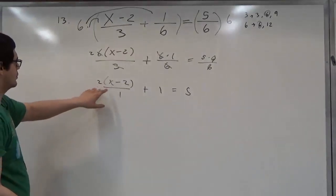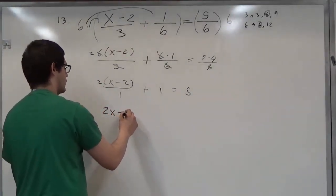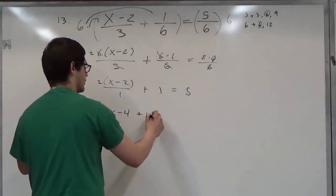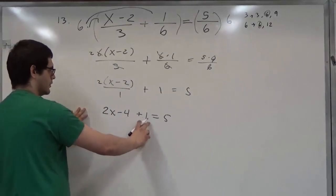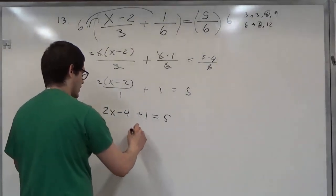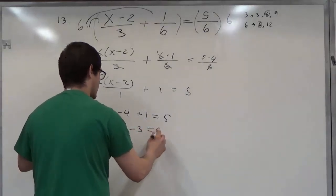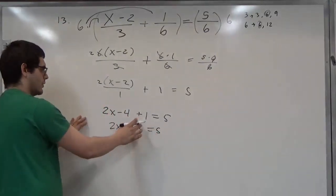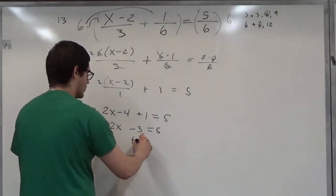Now we can distribute the 2 here to have 2x minus 4 plus 1 equals 5. It makes problems easier to combine like terms first. Now we want to get the x alone, so we can add 3 to both sides.